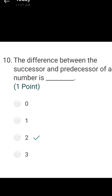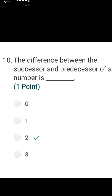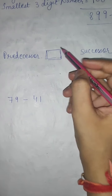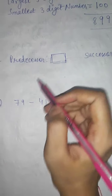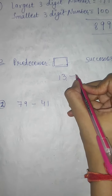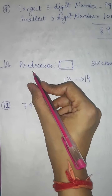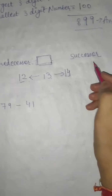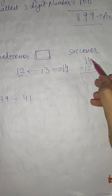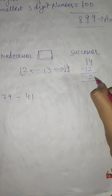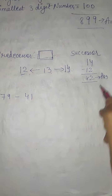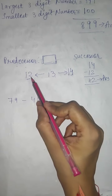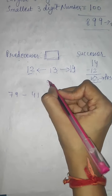The next question: the difference between the successor and the predecessor of a number is 2. How does 2 come? The successor is the number after, and the predecessor is the number before. For example, take 13: its successor is 14 and its predecessor is 12. So 14 minus 12 equals 2. The difference between the successor and predecessor of any number is always 2.